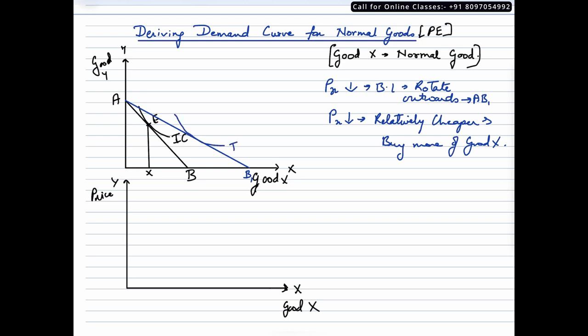this IC curve which is IC1. The point of equilibrium is E1, and at point E1 the consumer is now consuming